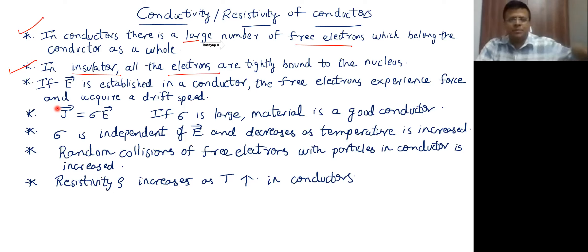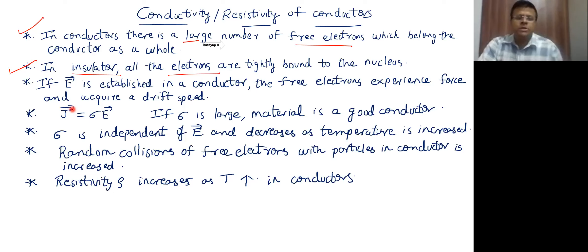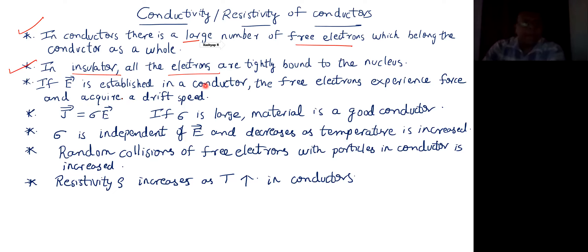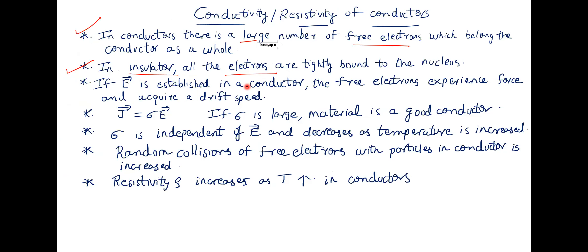We just completed one section in modern physics where we spoke about the energy levels in which an electron can be found. We had seen that every electron can be found in certain discrete energy levels. We will be drawing the energy level band diagrams for the insulator, conductor, and semiconductor. On the basis of that we will be explaining why insulators have tightly bound electrons and conductors have free electrons.